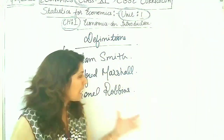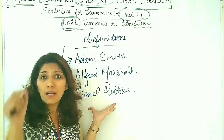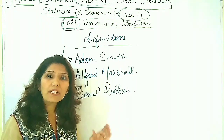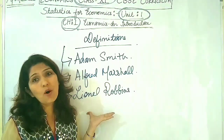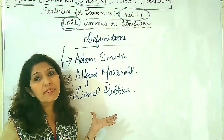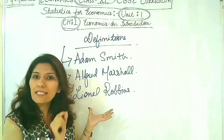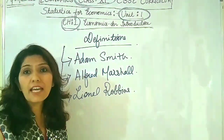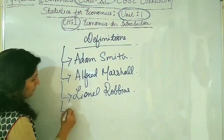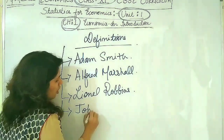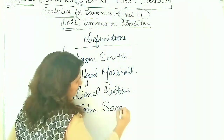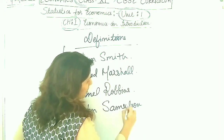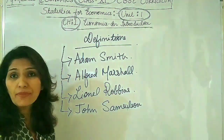Lionel Robinson wrote a very famous quote: human wants what they can't have. He is always remembered with this quote — human wants what they can't have. All three economists were from Europe, and after them came the fourth economist, John Anthony Samuelson. He was an American economist.